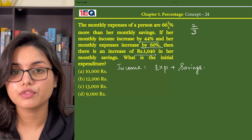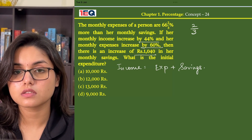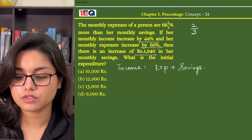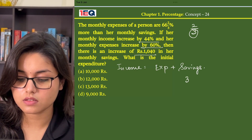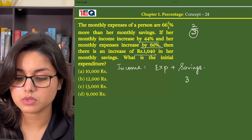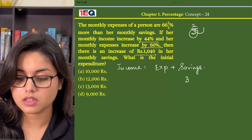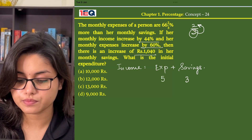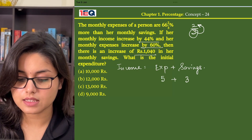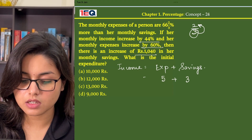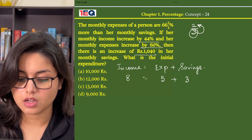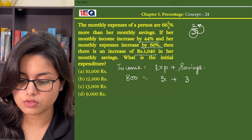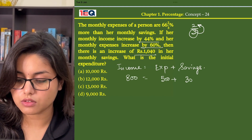Income is equal to expenditure plus savings. If her savings are 3, then her monthly expenses will be 2 more than it, that means 5. And similarly, the income will be 8. Now we'll add two zeros each for easy calculation, giving us savings = 300, expenses = 500, income = 800.